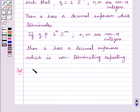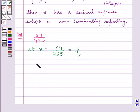The given rational number is 64 upon 455. Let x be equal to 64 upon 455. This is of the form p upon q. Here we have q is equal to 455.